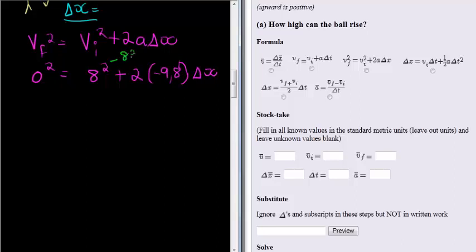Simplification is very simple. We subtract the eight squared on both sides. Eight squared is 64, so on the left hand side we get negative 64 is equal to, on the right hand side we have two times negative 9.8, which is negative 19.6.